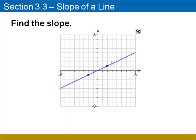In this example, notice that the rise is 2 units, while the run is 4. The slope is 2/4, or simplified, 1/2.